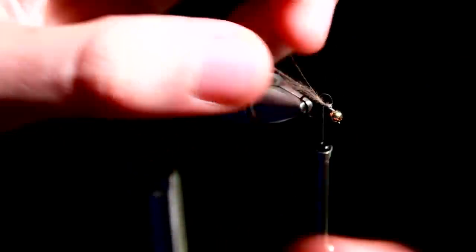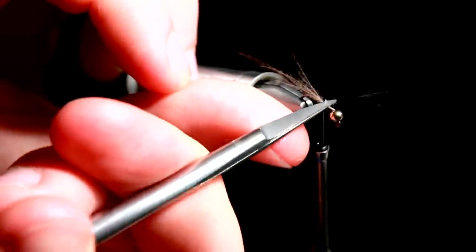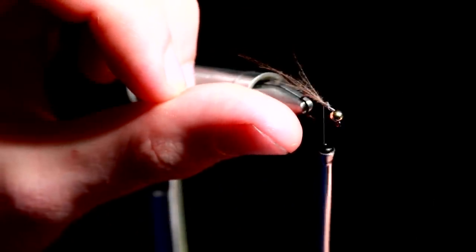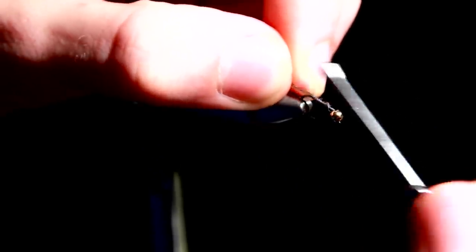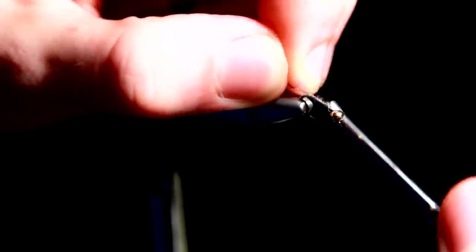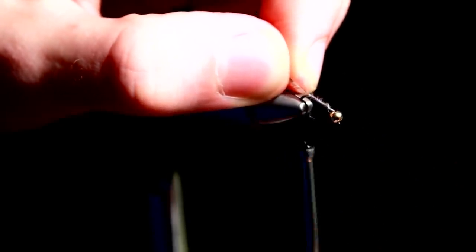After having that tied in and trimming off the surplus, we tie in our rib. It's one strand of flashaboo, or to be more specific, flashaboo mirage. Then we run the thread down the hook shank all the way to the bend like that.